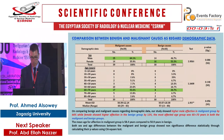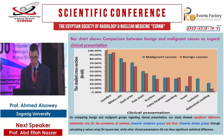There was a high male predominance in the malignant group, while females were more affected in the benign group. The most affected age group for both benign and malignant lesions was 60 to less than 70 years. There was a significant difference for the presence of cachexia towards the malignant group, while fever was significantly associated with the benign group.